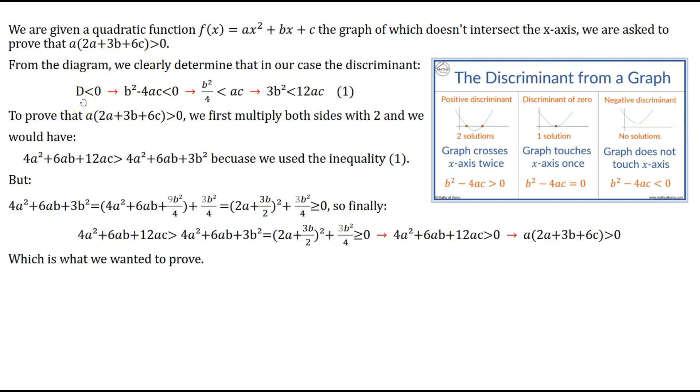So in our case, Δ < 0, or b² - 4ac < 0, or in this case, b²/4 < ac. By multiplying both sides with 12, and we will see later why I say to multiply with 12, we will have that 3b² < 12ac. This is inequality number one, which we will use a little bit later in the proof.